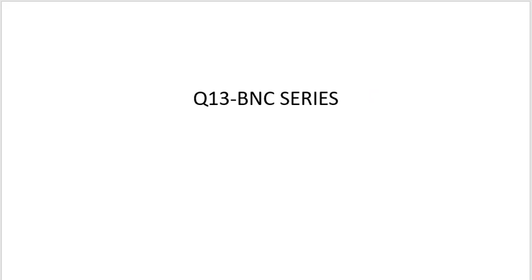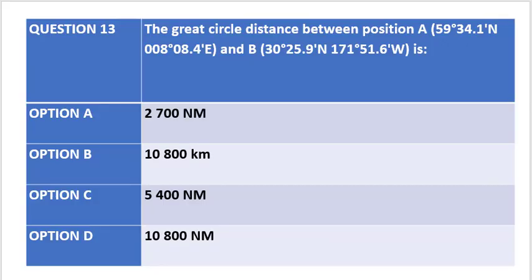Question 13 in the BNC series. The question states the great circle distance between position A which is 59 degrees 34.1 minutes north and 8 degrees 8.4 minutes east, and point B which is 30 degrees 25.9 minutes north and 171 degrees 51.6 minutes west. The options are given below.